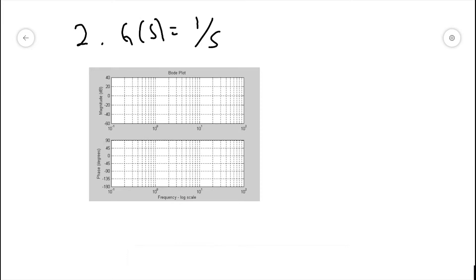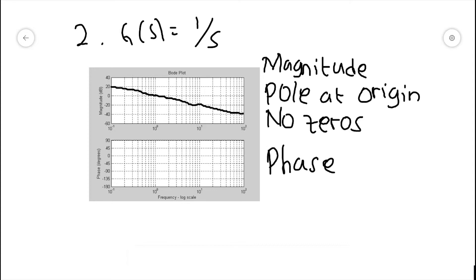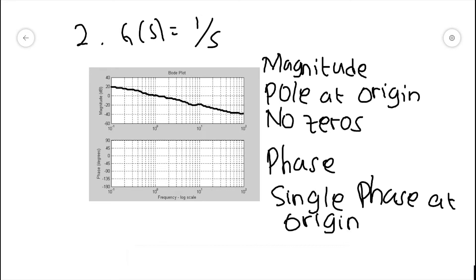The second form is G(s) = 1/s — it only has a pole at the origin and no zeros. The magnitude plot will continuously fall 20 decibels per decade, but at the frequency of one radian per second, the magnitude will always be zero decibels. The plot will look something like this. For the phase, because the transfer function only has a single pole at the origin, the phase diagram will be constant at minus 90 degrees. The plot will look like this.